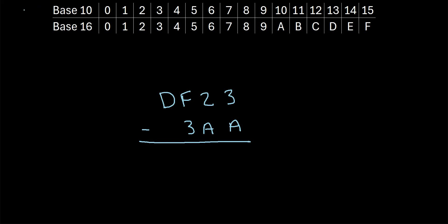In a base 10 system, or sometimes just called a decimal system, we have values that start at 0, then they go up to 1, 2, 3, and they just keep going up and they only use numbers.